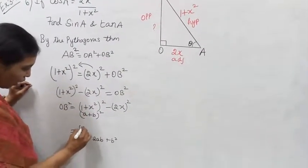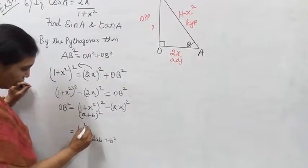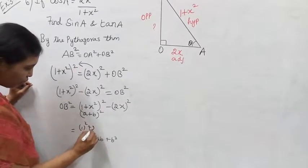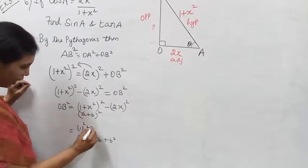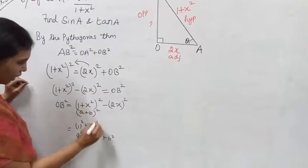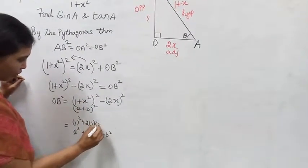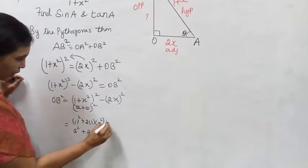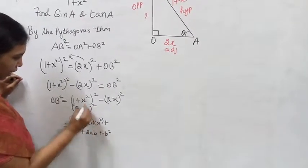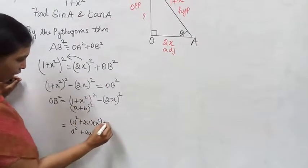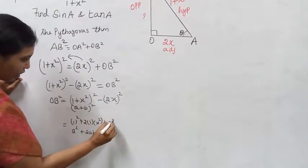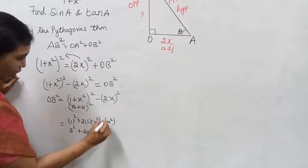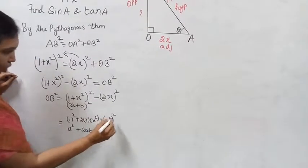Substituting: a is 1, b is x squared. So we get 1 squared plus 2 times 1 times x squared plus x squared all squared, which gives 1 plus 2x squared plus x to the power 4.